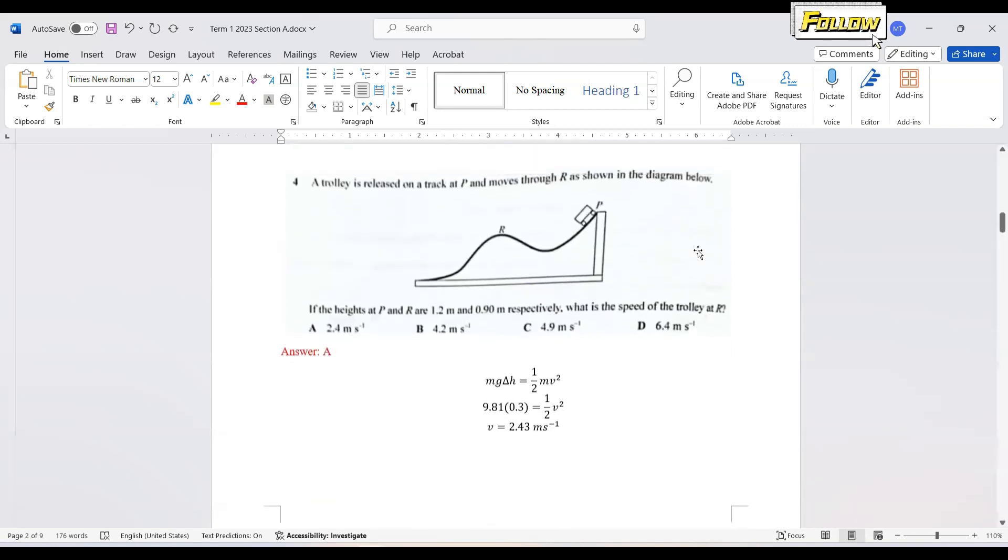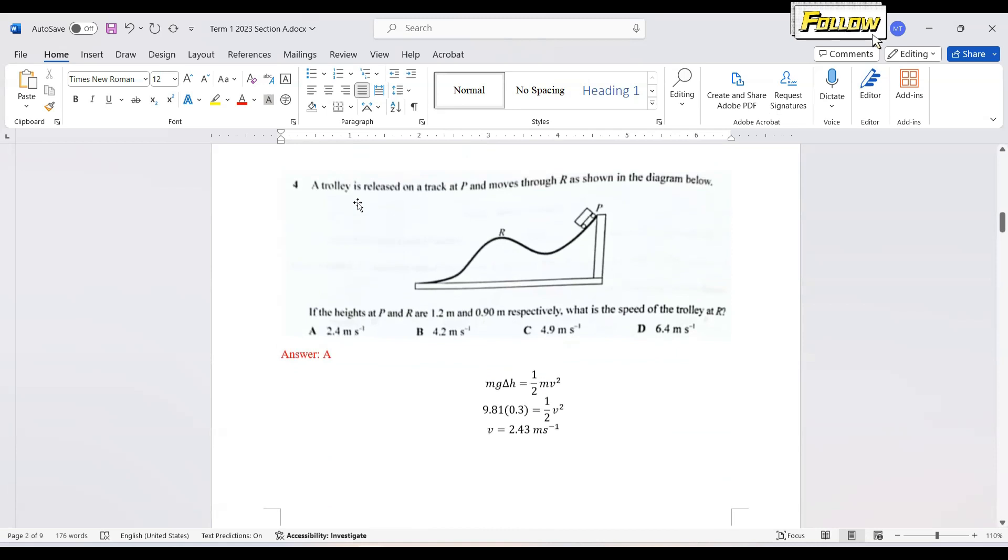We move on to question number 4. A trolley is released on a track at P and moves through R as shown in the diagram. If the height at P and R are 1.2 and 0.9 respectively, what is the speed of the trolley at R? We shall apply the principle of energy conservation.